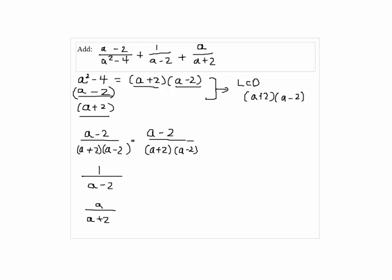The second fraction is missing a plus 2, so we multiply it top and bottom by a plus 2, so we have a plus 2 over a plus 2 times a minus 2.